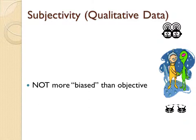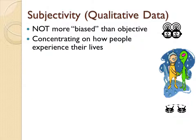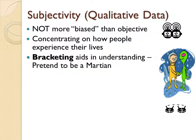Subjectivity is not biased per se, and it's not necessarily more biased than objective research. Subjectivity simply means that we are concentrating on how people experience their lives. Think about grammar — every sentence has a subject, a verb, and an object. The subject is the actor, the entity doing something. So we're trying to see the world through the point of view of the actor, the subject. That's where the word subjectivity comes from. We're interested in what people say about their lives and how they think about the way they live.